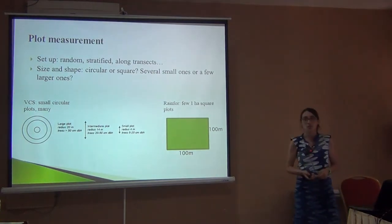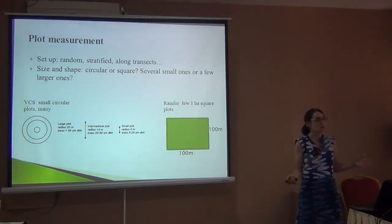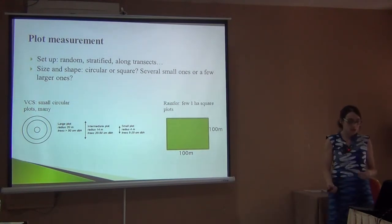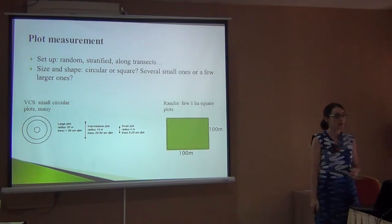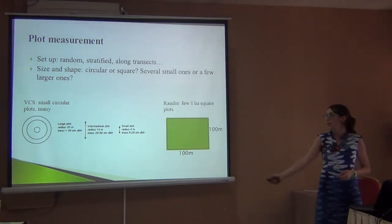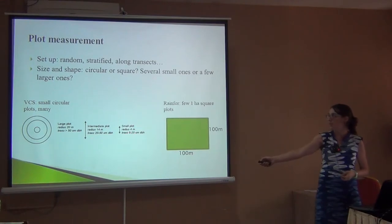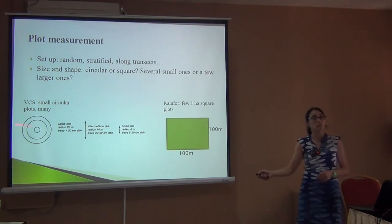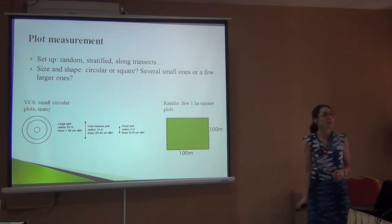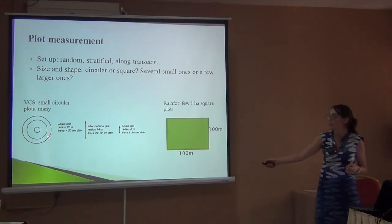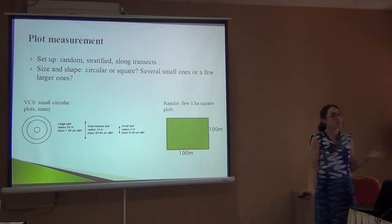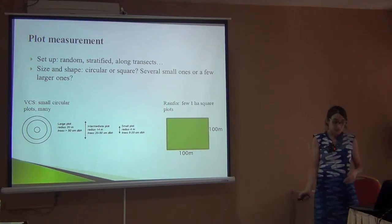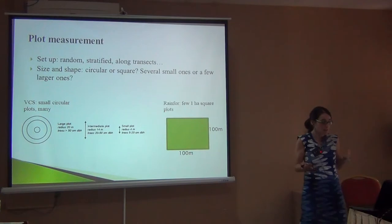Another question that comes up in field measurement is: where do we measure the trees and how many do we need to measure? Two protocols are very popular. The VCS protocol uses small circles: in the little circle you measure everything from 5 to 20 cm, in the middle circle from 20 to 50 cm, and in the bigger circle everything above 50 cm. This is pretty fast. The problem is that in the field it's hard to know if a tree is in or out when you're at the boundary, because humans are good at perceiving square lines but terrible at circles.